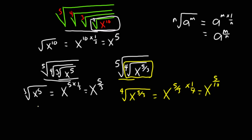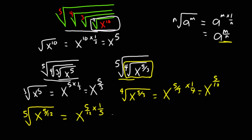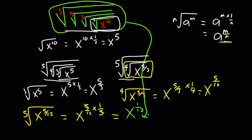This now becomes the fifth root of x exponent 5 over 12. Applying the property, the fifth root of x exponent 5 over 12 gives us x exponent 5 over 12 times 1 over 5, which leaves us with x exponent 1 over 12. Therefore the simplified form is x exponent 1 over 12.